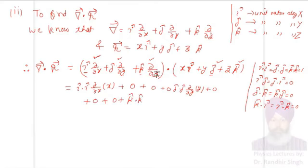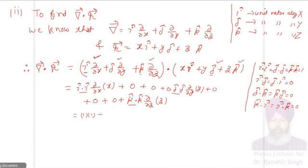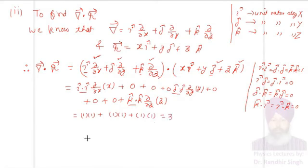So it becomes ∂z/∂z, which is one. This is one, this is one, and this is one. The derivative of x with respect to x is also one, so it will be 1×1 + 1×1 + 1×1, which equals 3. This completes the second part of the discussion: del vector dot r vector is equal to 3.